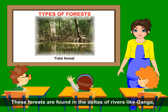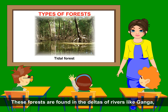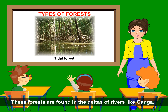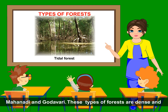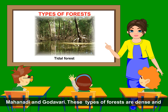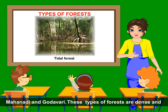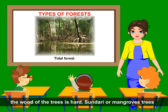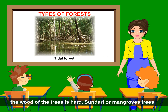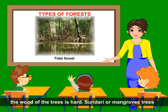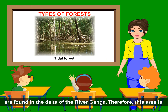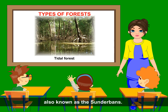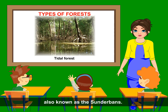Tidal Forests. These forests are found in the deltas of rivers like Ganga, Mahanadi and Godavari. These types of forests are dense and the wood of the trees is hard. Sundari and mangrove trees are found in the delta of the river Ganga. Therefore, this area is also known as Sundarbans.